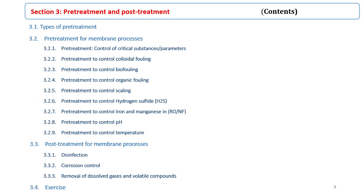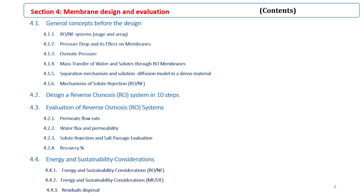Section 3 covers pre-treatment and post-treatment. You'll learn about the types of pre-treatment and how to increase membrane life by appropriate selection of pre-treatment and post-treatment according to feed water quality, with exercises at the end. In Section 4, you'll learn how to design a reverse osmosis system in 10 steps, with examples and how to evaluate it.